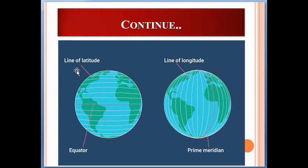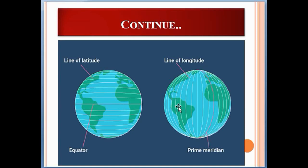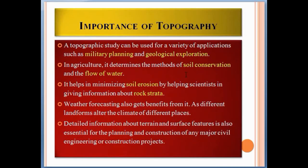This is the line of latitude, and this is the equator. Latitude is actually the north-south position with respect to the equator. These are the longitude lines, and longitude is the east-west position with respect to the prime meridian.